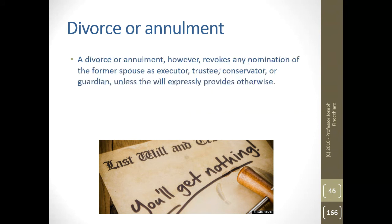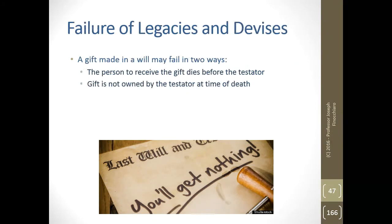A divorce or annulment revokes any nomination of the former spouse as executor, trustee, conservator, or any other important role, unless the will expressly provides otherwise. So if you divorce your spouse but still want them to act on your behalf, best practice is to rewrite the will and ensure they are capable of doing what you want.